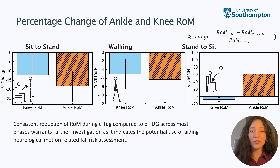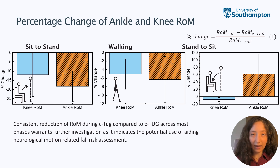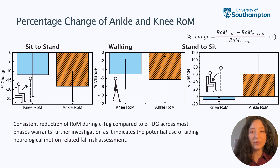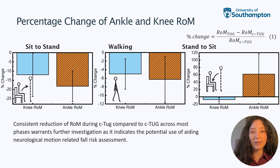Ankle and knee joint range of motion increases or decreases have consistency across test phases. Ankle and knee range of motion has been associated with poor balance measures. These findings could potentially aid fall risk assessment by providing objective measures for neurological limb motion control.